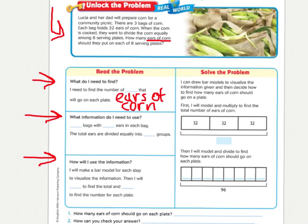What information do I need to use? I'm going to have to use that there's three bags of corn, and each of those bags has 32 ears. And then I'm also going to need to use this information that they're going to divide the corn into eight groups.